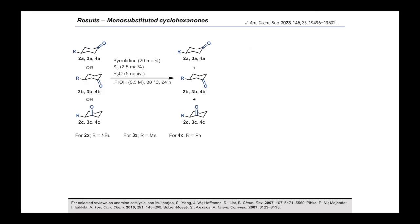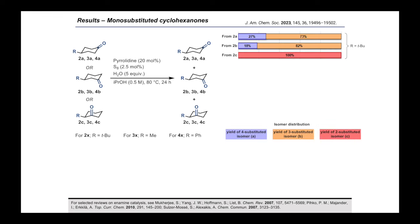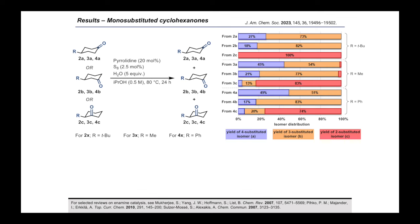After the reaction optimization, we tested several monosubstituted cyclohexanone derivatives and compared the obtained isomer distribution. For R equals tert-butyl, from both the 4 and the 3-substituted isomer, we obtained practically the same isomer distribution, though the 2-substituted isomer did not show any conversion. For R equals methyl or phenyl, the same preference for the 3-substituted isomer can be observed. Interestingly, formation of the 2-substituted isomer could be observed from 3 and 4-methylcyclohexanones, and for both 2-methyl and 2-phenylcyclohexanone, conversion to the other isomers could be observed, albeit in a limited fashion.